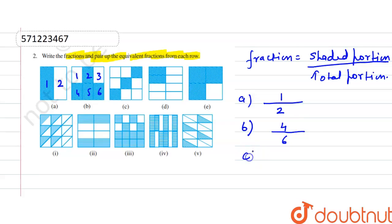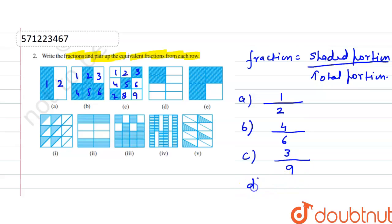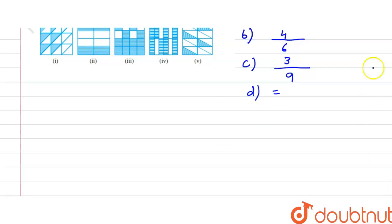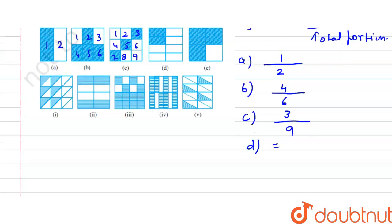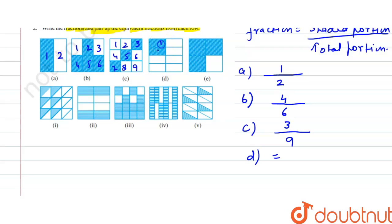So figure B is 4/6. Now for figure C, counting 1, 2, 3, 4, 5, 6, 7, 8, 9 — total is 9. The shaded ones are 1, 2, 3, so it is 3/9. For figure D, total is 8 and the shaded one is 2, so it is 2/8.